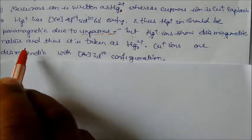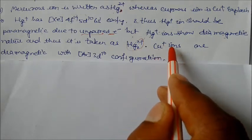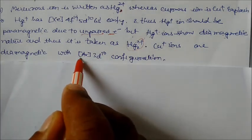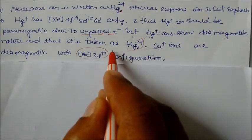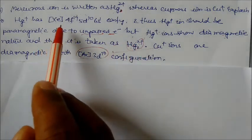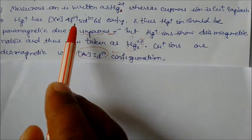While in case of Cu+ ions they are diamagnetic with argon 3d10 configuration. Configuration of Cu+ ion and for configuration of Hg2+ is 4f14 5d10. This is the configuration of Hg2+. So these are the answers.